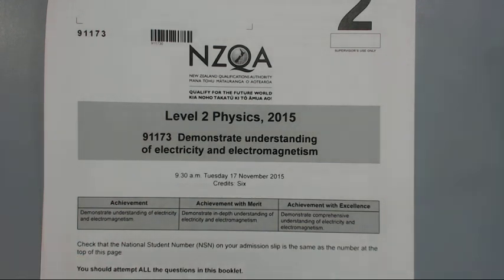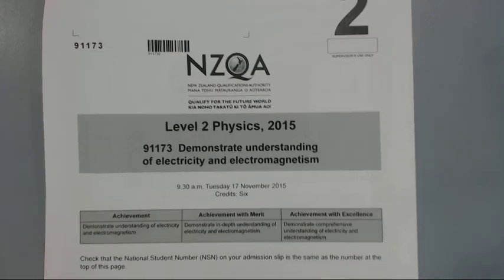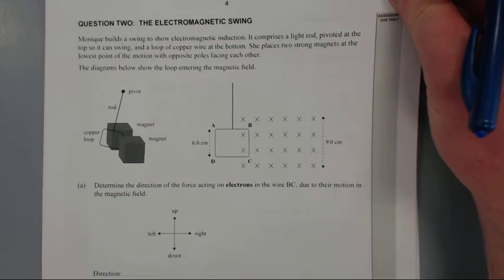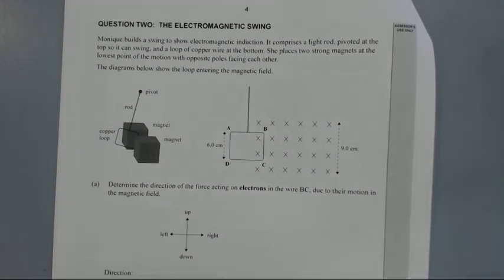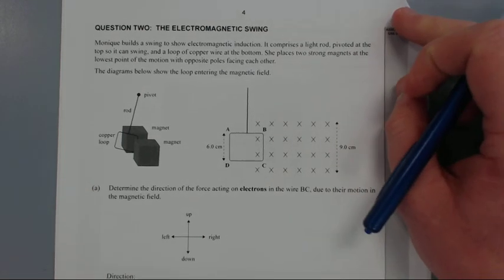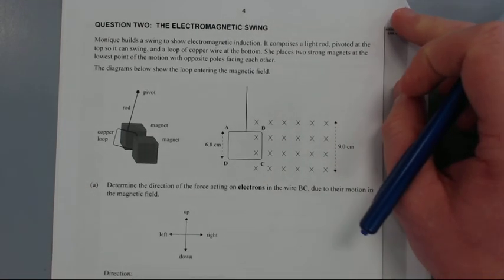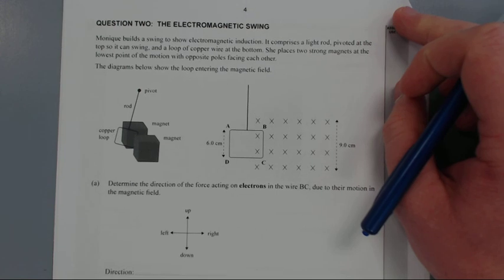Right, for this video I'll be working through question 2 of the level 2 2015 electricity exam. Question 2: Monique builds a swing to show electromagnetic induction. It comprises a light rod pivoted at the top so it can swing a loop of copper wire at the bottom. She places two strong magnets at the lowest point of the motion with opposite poles facing each other. The diagrams below show the loop entering the magnetic field.